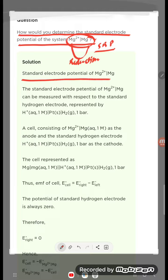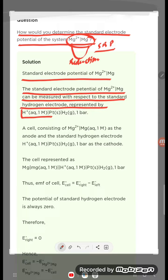The standard electrode potential of Mg²⁺ to Mg can be measured with respect to the standard hydrogen electrode, represented by H⁺(aq, 1 M)|Pt|H₂(g), 1 bar. A cell consisting of Mg²⁺/Mg as the anode and the standard hydrogen electrode as the cathode is used.